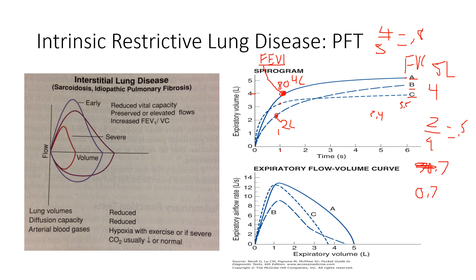Looking at our flow-volume curves, the shape is preserved — we don't see that same scooping as in obstruction — but the overall volume is less. The amount of air that can be moved in and out of the lungs is reduced. As disease becomes more severe, we see a left shifting of the flow-volume curve, with less and less volume in the lungs.